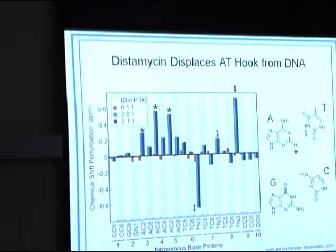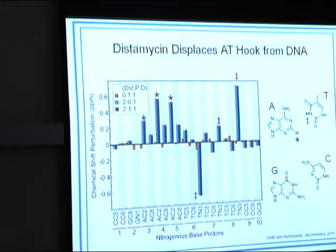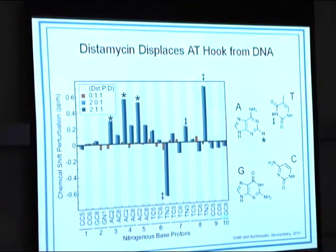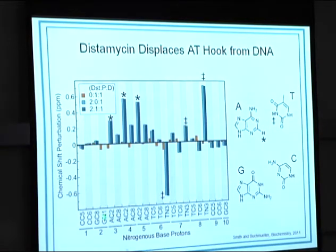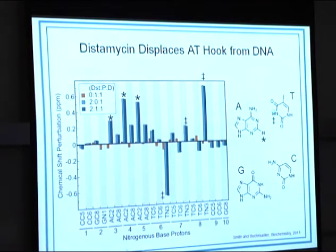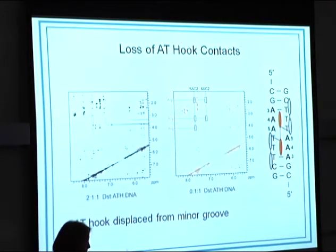Looking more closely at the data: you have four base types — A, G, C, T — and protons attached to carbon give a C signal, protons attached to nitrogen give an N signal. Where we see the biggest amount of change is at the A and at the T. This indicates that distomycin binds to AT base pairs and doesn't bind to GC base pairs — it binds to AT-rich sequences of DNA.